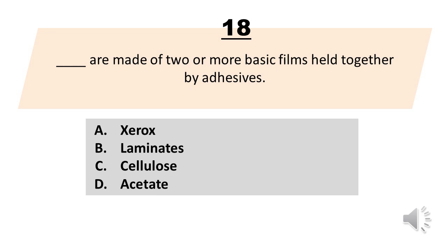Blank are made of two or more basic films held together by adhesives. A. Xerox. B. Laminates. C. Cellulose. D. Acetate. The correct answer is Letter B, Laminates.